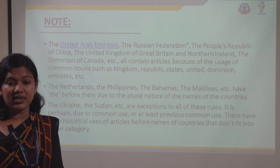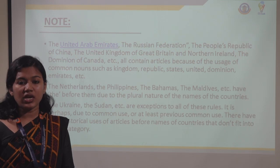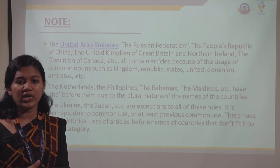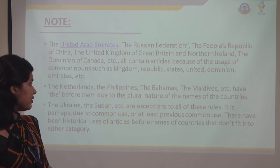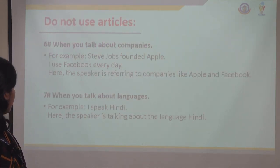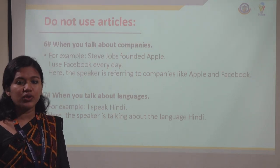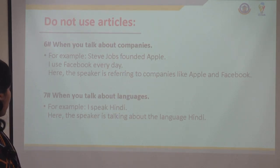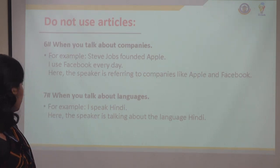English is a language that cannot be classified into a strict set of rules — we cannot make everything into rules. There will always be some exceptions when talking about articles. Also, do not use an article when talking about companies. For example, 'Steve Jobs founded Apple.' Apple and Amazon are companies, so you do not have to use a definite article in front of them. Similarly, for languages like Hindi and Tamil, you don't have to use any articles.